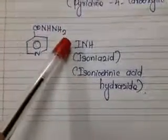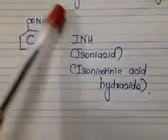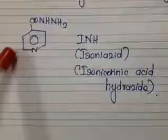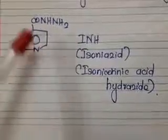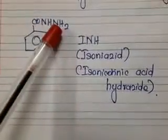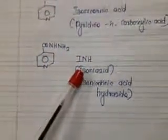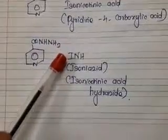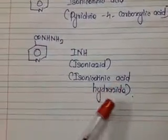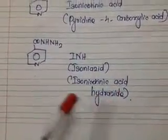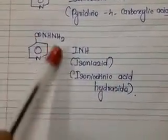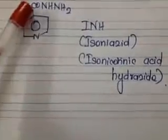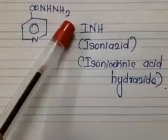Hydrazine means NH2-NH2, and this is the acid hydrazide group: CO-NH-NH2. So isonicotinic acid hydrazide can also be called INH. The structure is a pyridine ring with CO-NH-NH2 in the fourth portion.